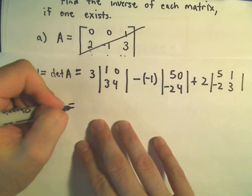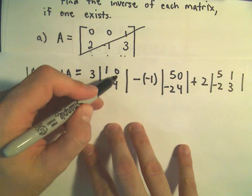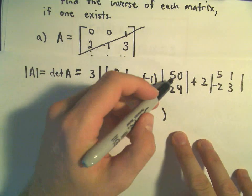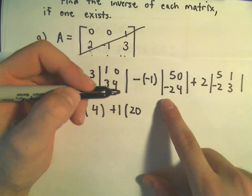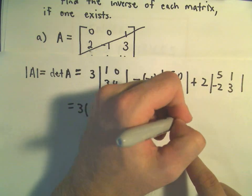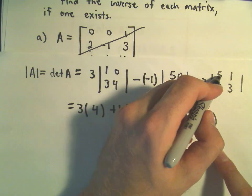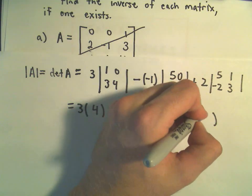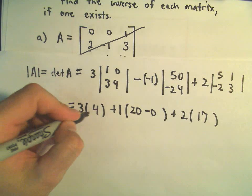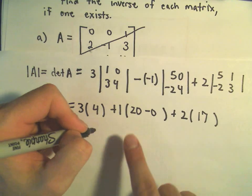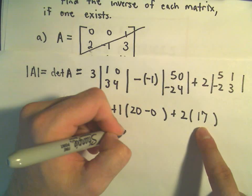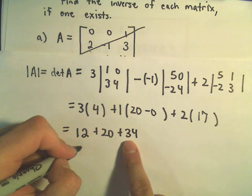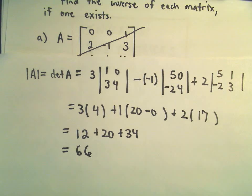Computing this: we get 3 times (4 minus 0), plus 1 times (5 times 4 minus 0), plus 2 times (5 times 3 minus negative 2). That gives us 3 times 4, which is 12, plus 20, plus 2 times 17 which is 34. So 12 plus 20 plus 34 equals 66 as the value of our determinant.